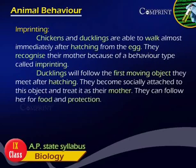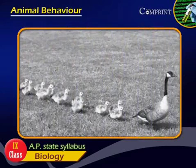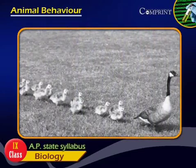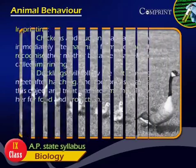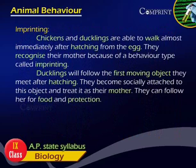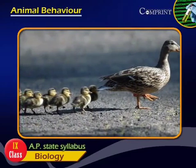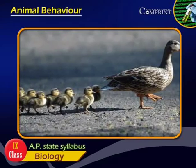Imprinting. Chickens and ducklings are able to walk almost immediately after hatching from the egg. They recognize their mother because of a behavior type called imprinting. Ducklings will follow the first moving object they meet after hatching, becoming socially attached to it and treating it as their mother. They can follow her for food and protection.